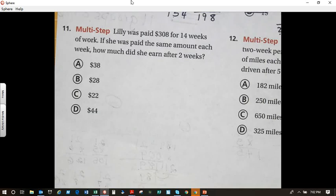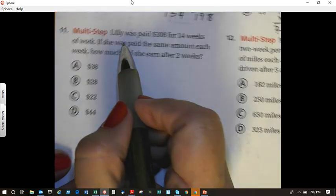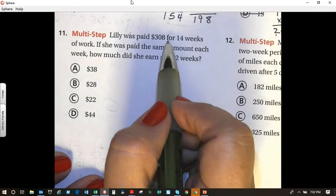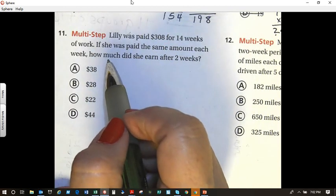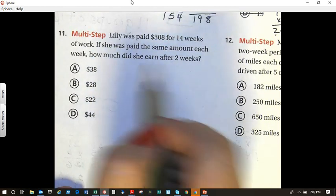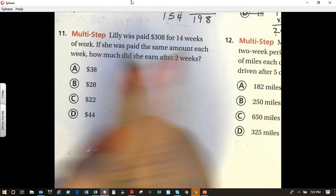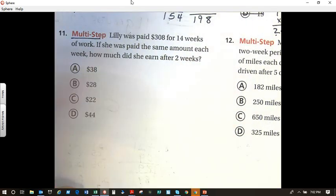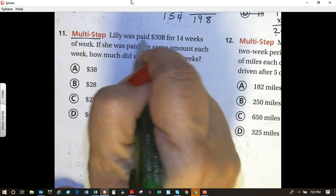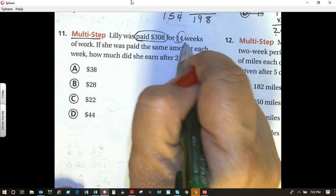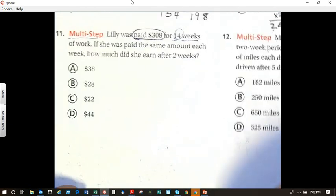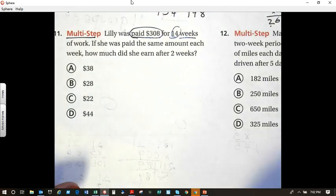Now we have two more problems to go. It's getting dark outside. Lily was paid $308 for 14 weeks of work. If she was paid the same amount each week, how much did she earn after two weeks? Multi-step problem. So first things first. This is how much she got paid. And it was only for 14 weeks. So what's that hidden question? How much did she get paid each week?